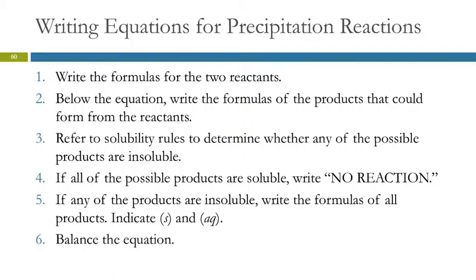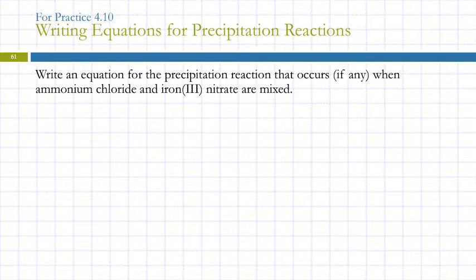Okay, so those are the steps. We're going to do some examples. Write an equation for the precipitation reaction that occurs, if any, when ammonium chloride and iron(III) nitrate are mixed.